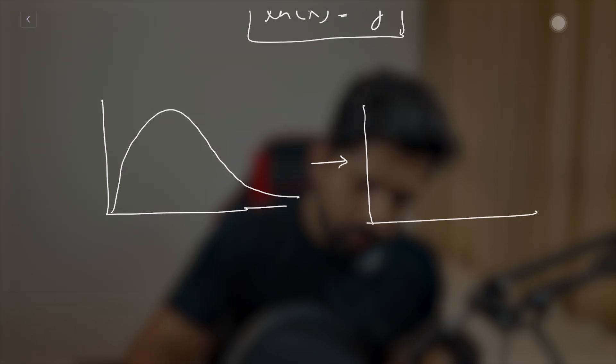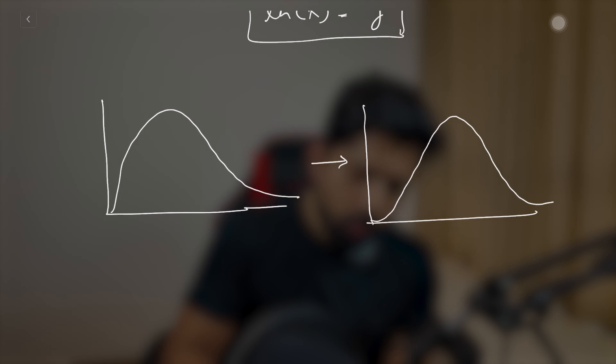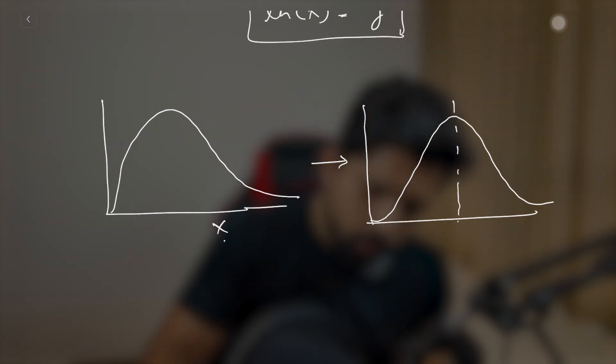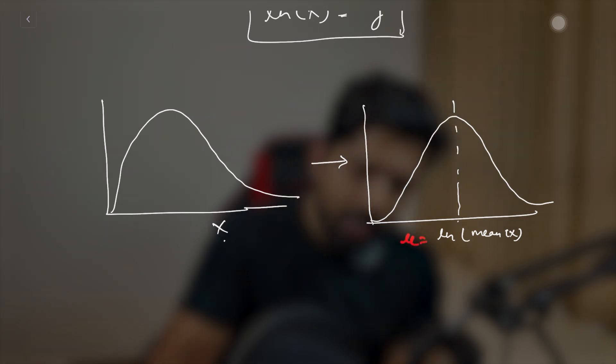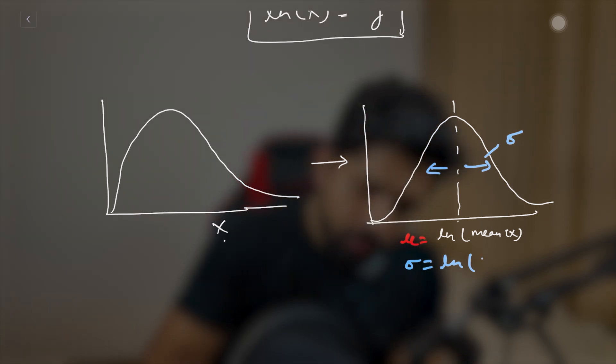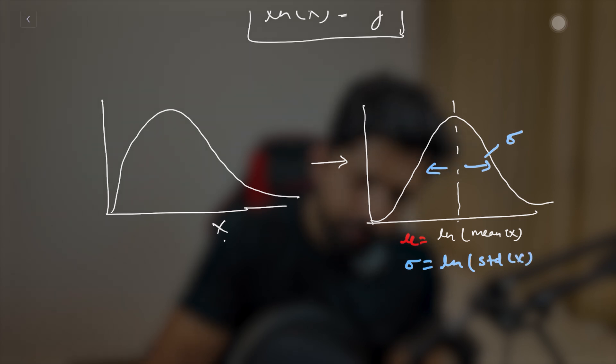We first convert the data to a normal distribution by taking the natural log. The mu or mean will be the mean of the natural log of x, and sigma will be the natural log of the standard deviation of x. This should be very clear now. We will see the real practical implementation of log normal distribution in upcoming videos, and we'll use it a lot when we study the Black-Scholes formula.